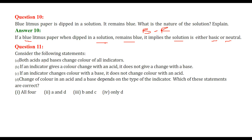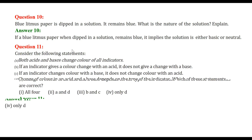Consider the given statements and choose the correct one. The answer is D: the change of color in an acid and base depends on the type of indicator. This is the correct answer. These were a few questions and answers on acids, bases and salts. Take care of yourself. Bye-bye.